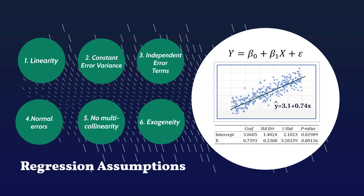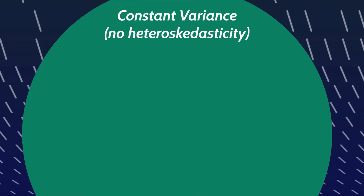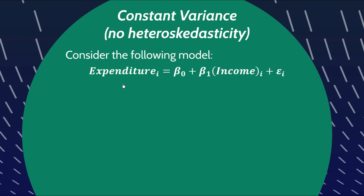Now let's have a look at the assumption of constant error variance. Constant variance is called homoscedasticity, so the assumption of constant variance implies that there's no heteroscedasticity. Consider you're trying to map out household expenditure as a function of household income. You know that on average if your income increases, your expenditure will increase. But if you have a very high income, you could either spend a lot or you could spend not very much, whereas with a very low income, you don't really have a choice — you can only really spend a small amount.